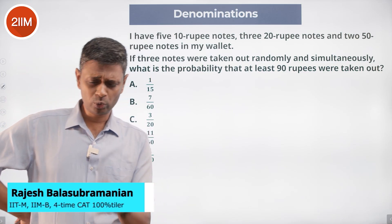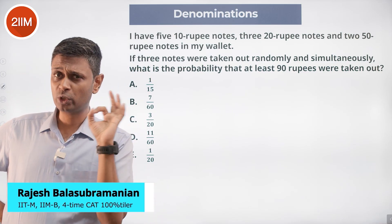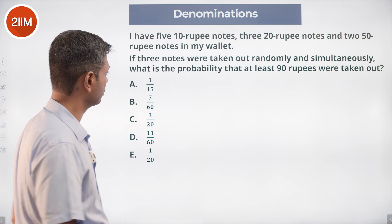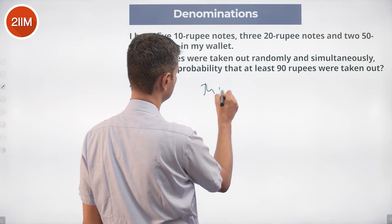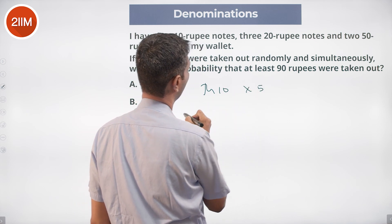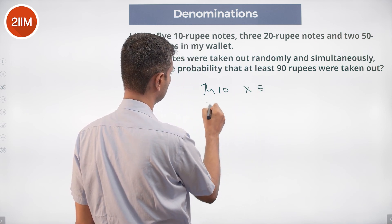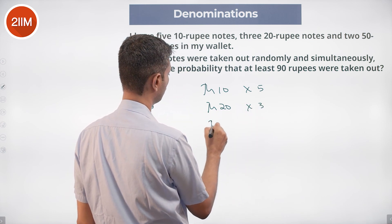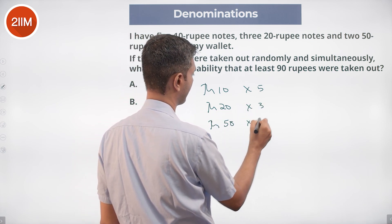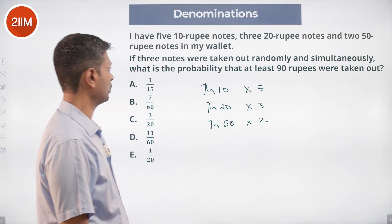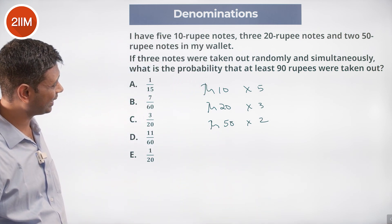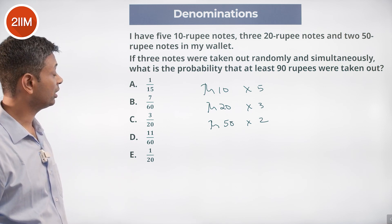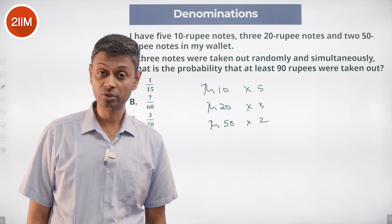Beautiful question — absolutely delightful. I had a tough time solving this. I have 5 ten-rupee notes, 3 twenty-rupee notes, and 2 fifty-rupee notes in my wallet. If 3 notes were taken out randomly and simultaneously, what is the probability that at least 90 rupees were taken out?